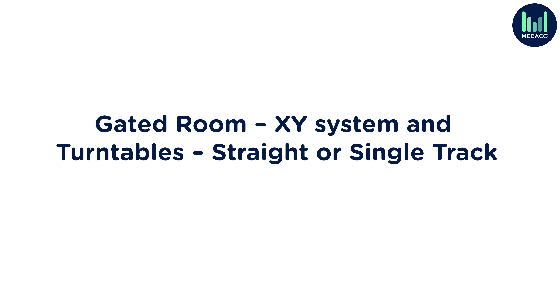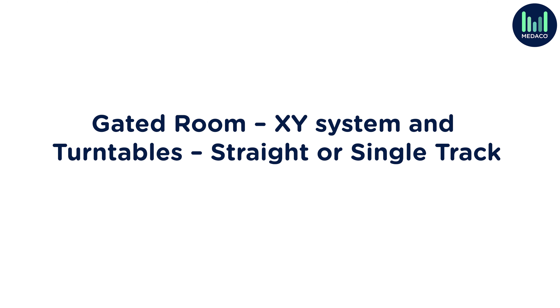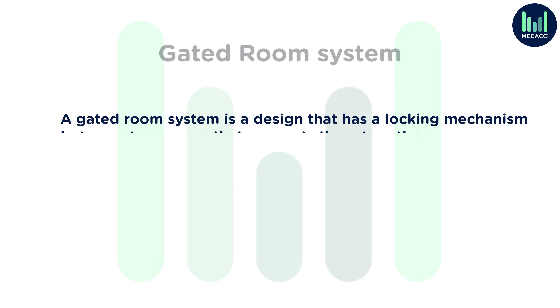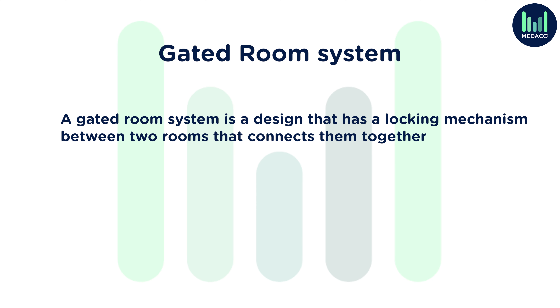When you need to enable a service user to move from one room to another — for example, from a bed to a bathroom — a room-to-room system is an ideal option. This design utilises two different tracks situated in each of the two rooms, with a motor pod for each track. This system also allows for transfer without the service user ever touching the floor.